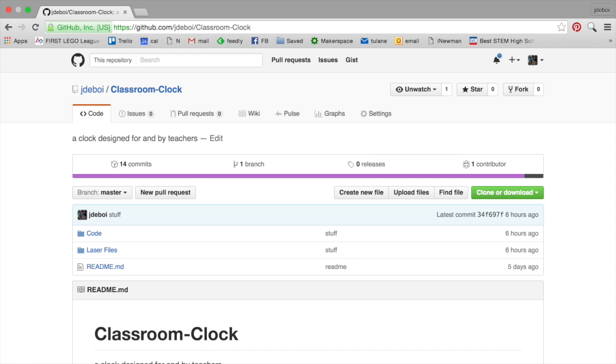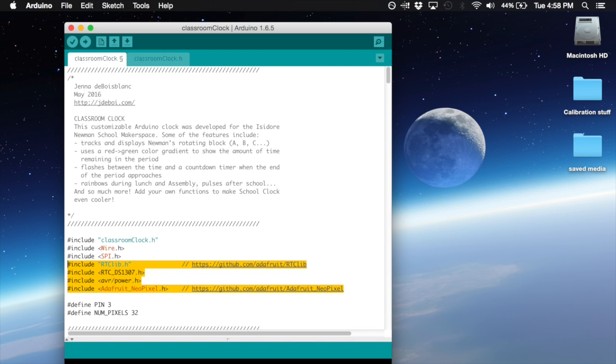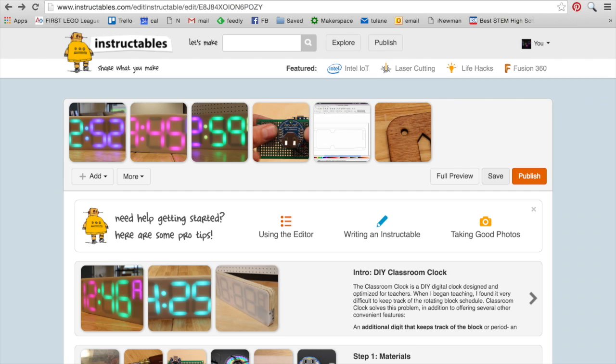Hooray! The last step! You can download the Arduino code from GitHub. You'll need to install several libraries and set values in the code so that the clock accurately tracks your schedule. See the Instructable page for additional instructions. Have fun!